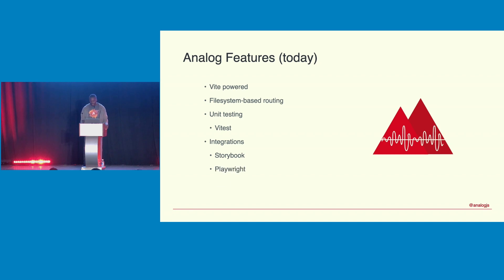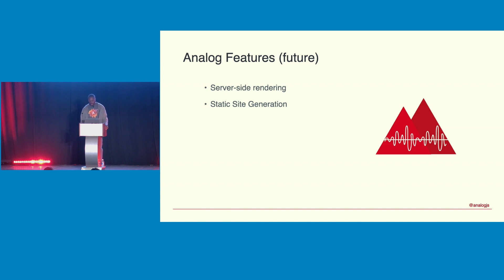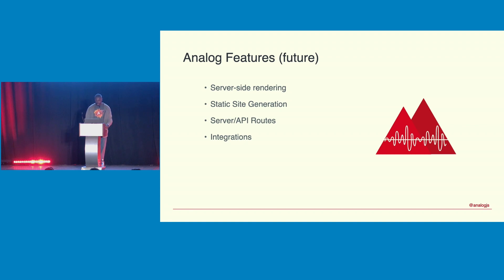Playwright has Vite support for component testing too. Future features coming with Analog include server-side rendering, which ties into Angular's evolution, static site generation — whether integrated with Astro or as part of the development flow — server API routes where you can define routes that talk to a database or use Firebase or hosted functions, and more integrations unlocked by Vite.